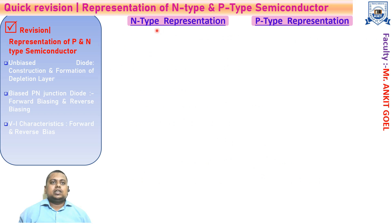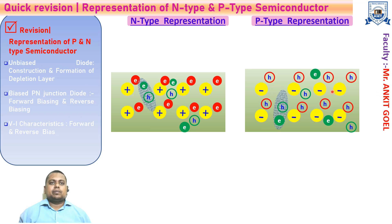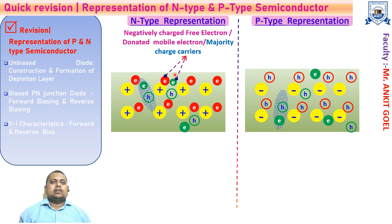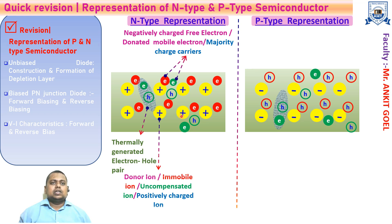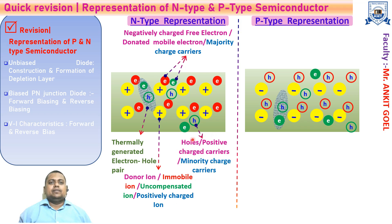Let us quickly discuss the representation of N-type and P-type semiconductor, since it is very useful in understanding the construction of the P-N junction diode. In the N-type, we have the free negatively mobile ion electrons and the thermally generated electron-hole pairs. These are the ions due to the impurity atoms — positively charged immobile ions — and we have holes which are positively charged and act as a minority charge carrier in the N-type semiconductor.